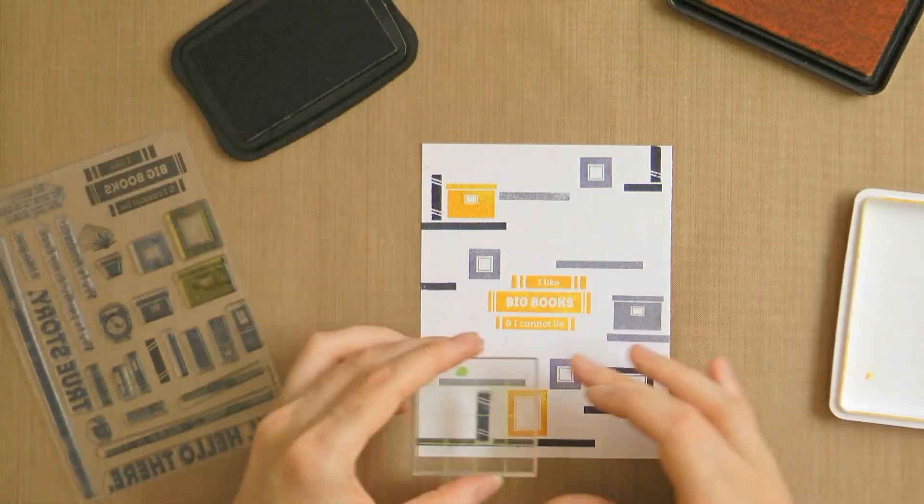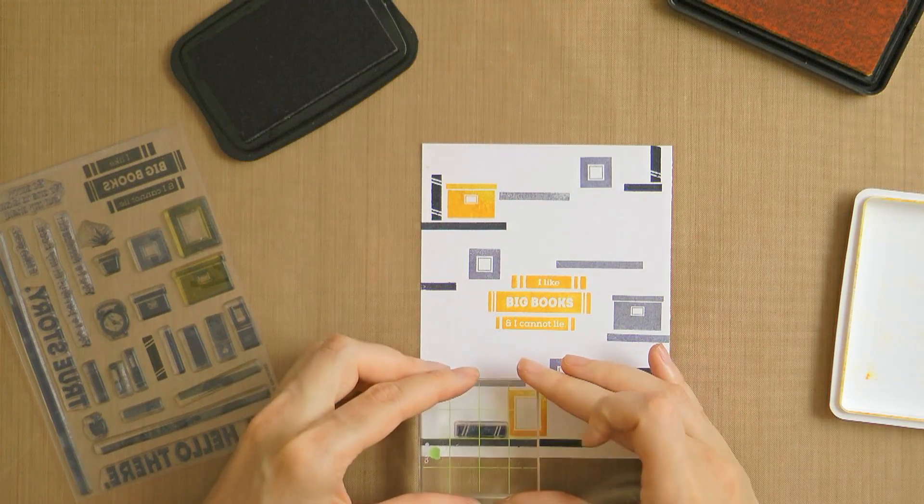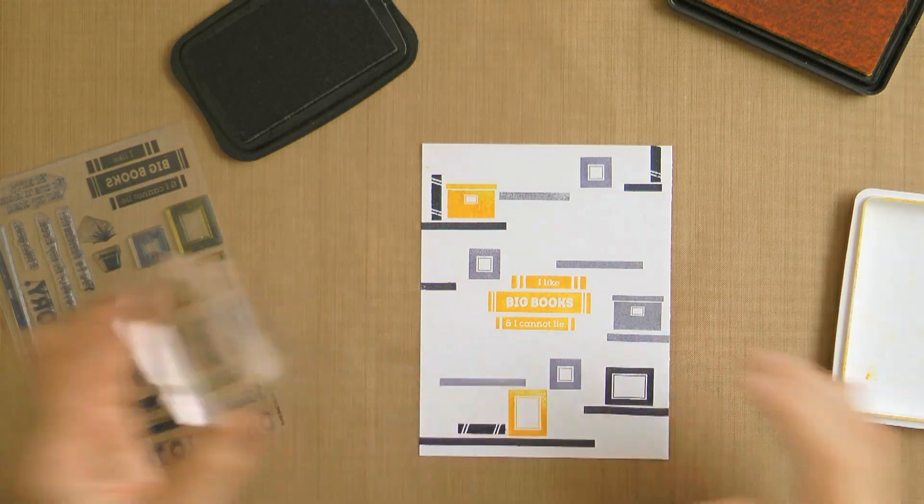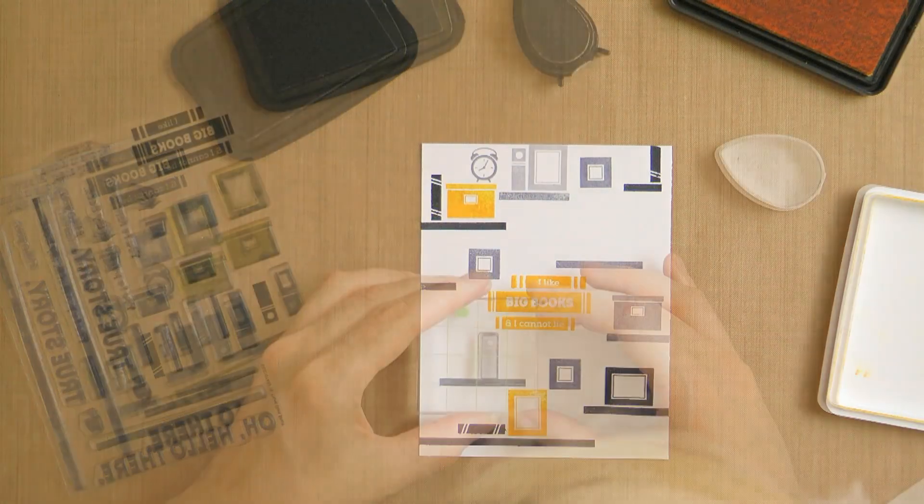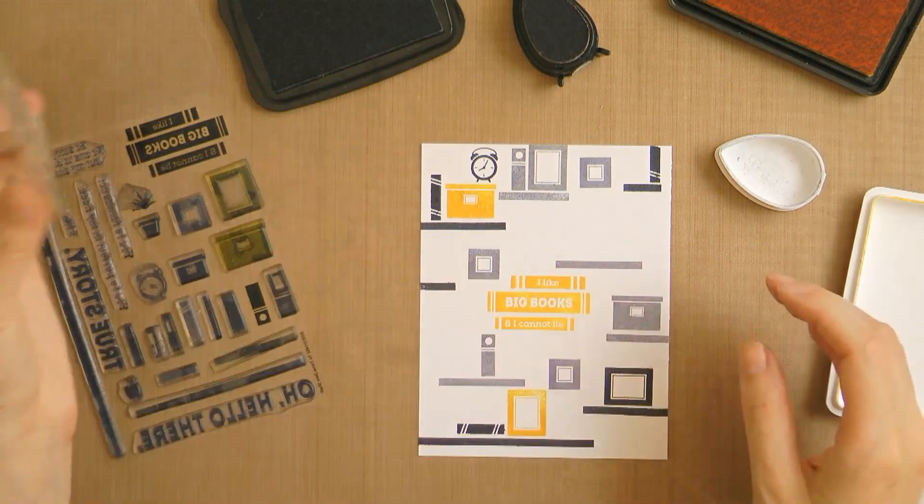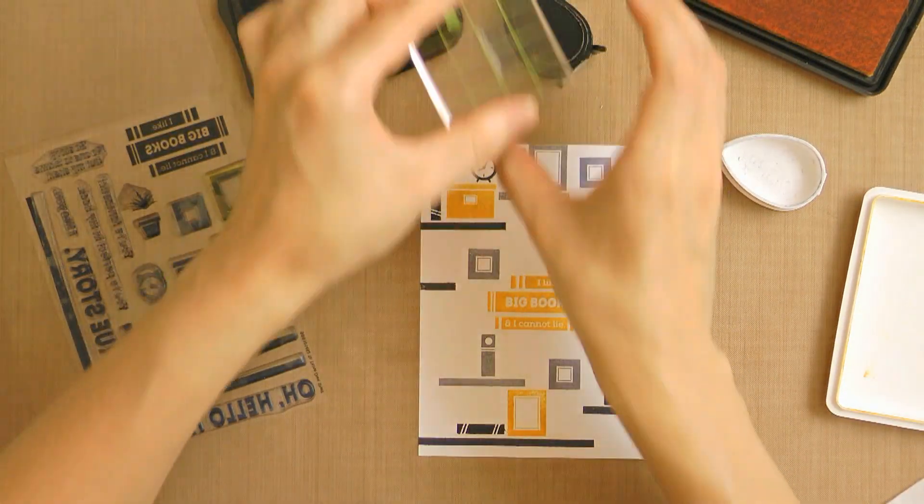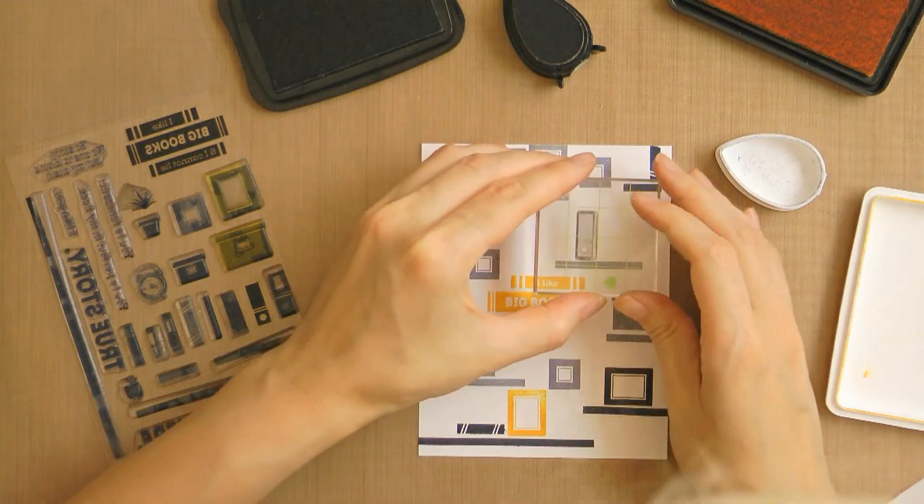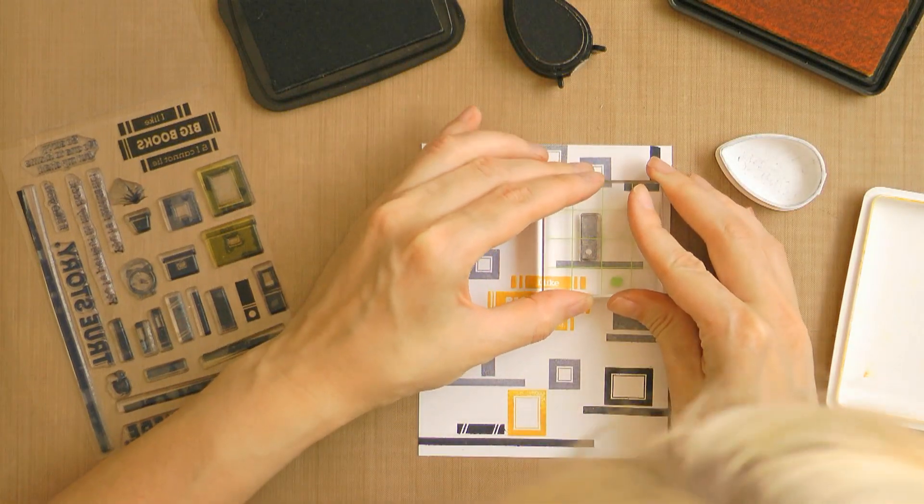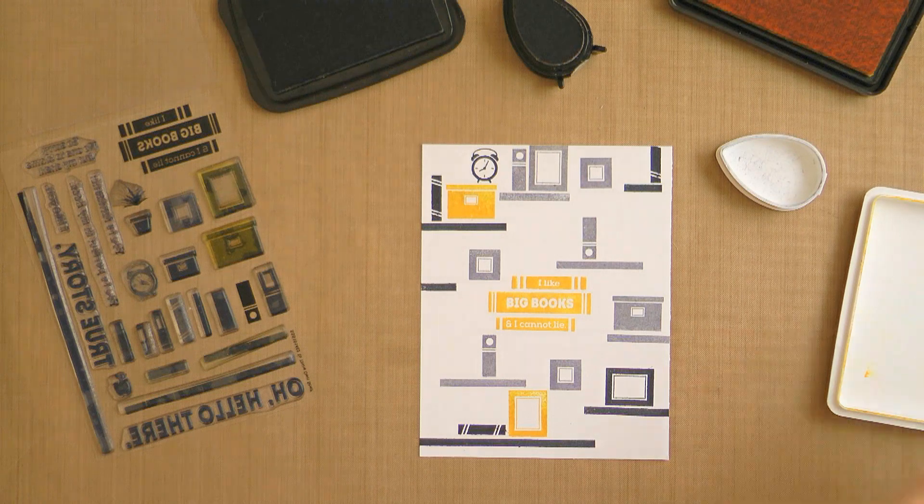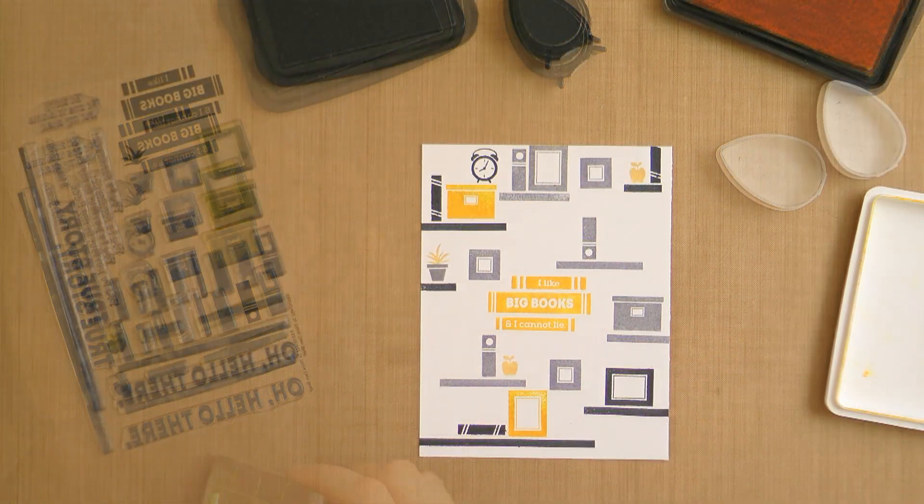So I then grabbed my larger box and stamped it a few times in gray and yellow. Next I selected the large frame and also stamped it in a few spots on my card. I had it placed vertically and horizontally too. I then moved on to stamping books. Some I stamped in black and then some in gray. Some stamped vertically and then some stamped horizontally laying on the shelf.